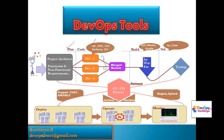We have different tools in the market. We have the GIT tool. There are some existing organizations that are using the SVN tool as well. This coding phase is complete — in this coding phase, we have the GIT tool already.